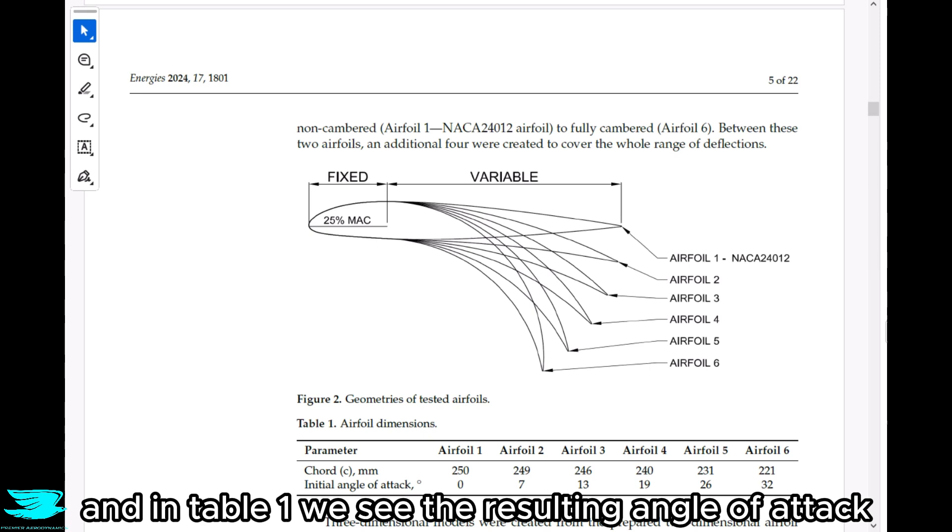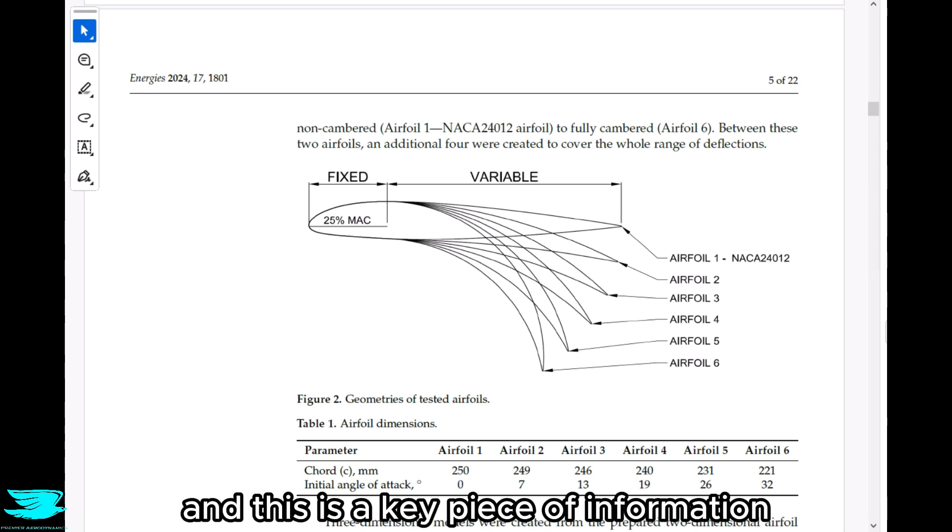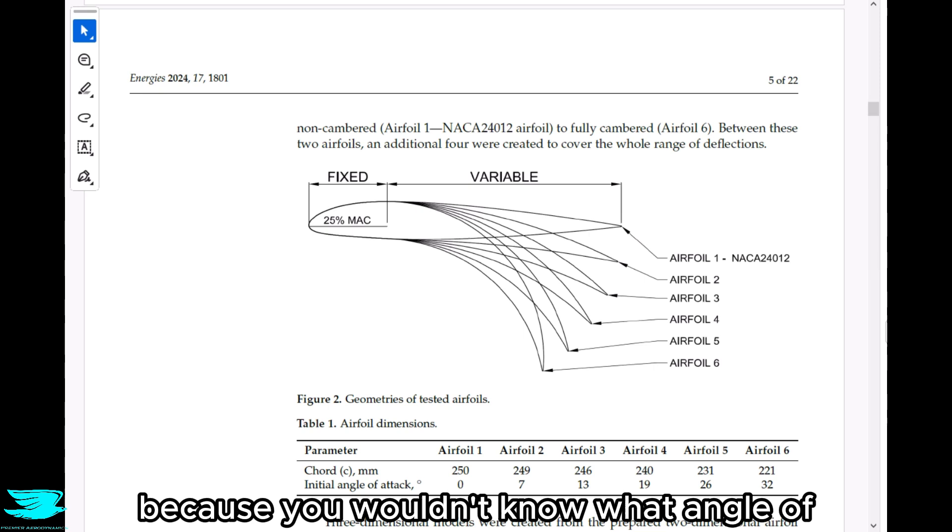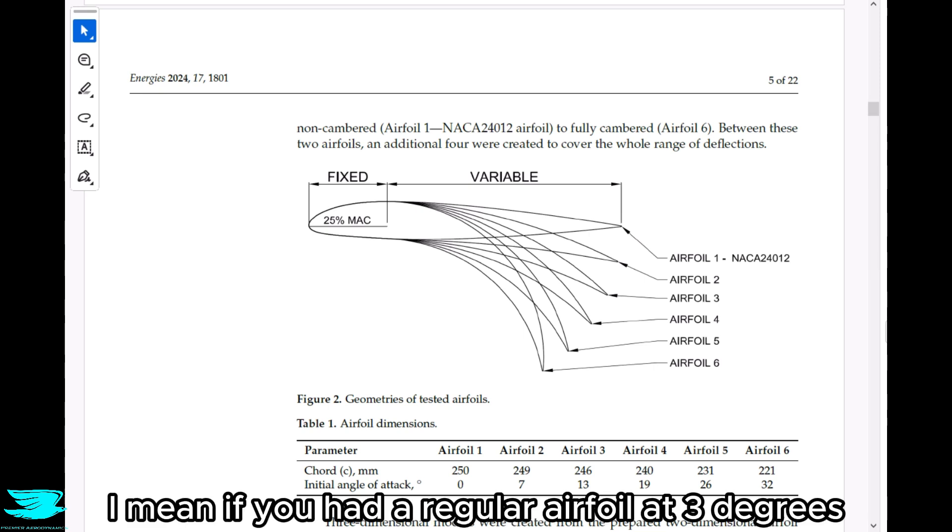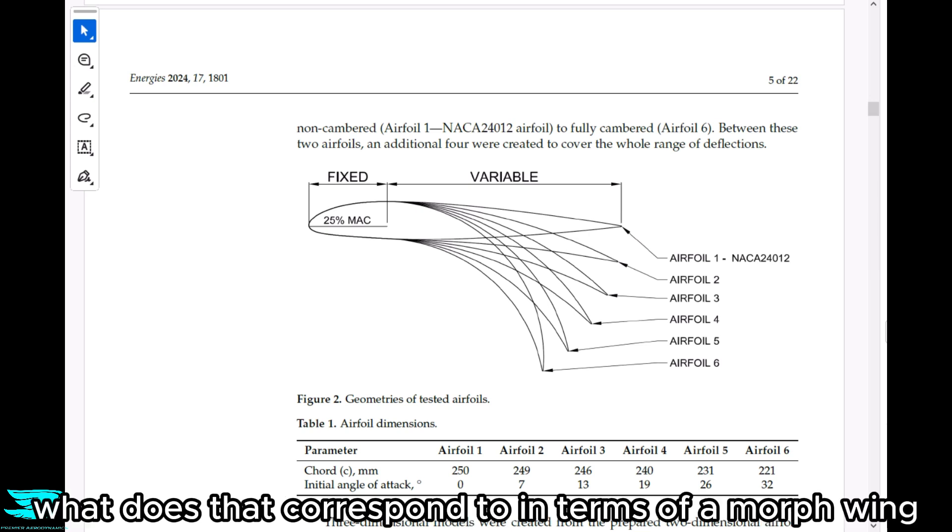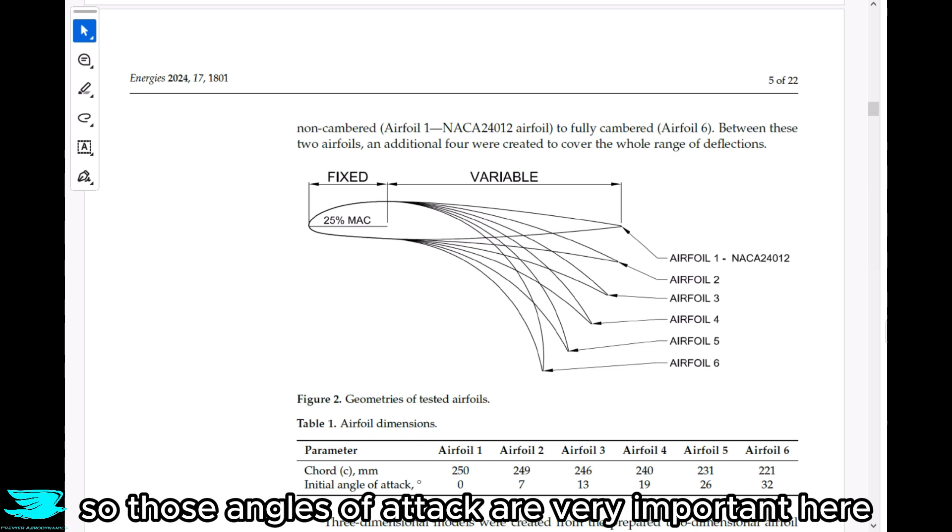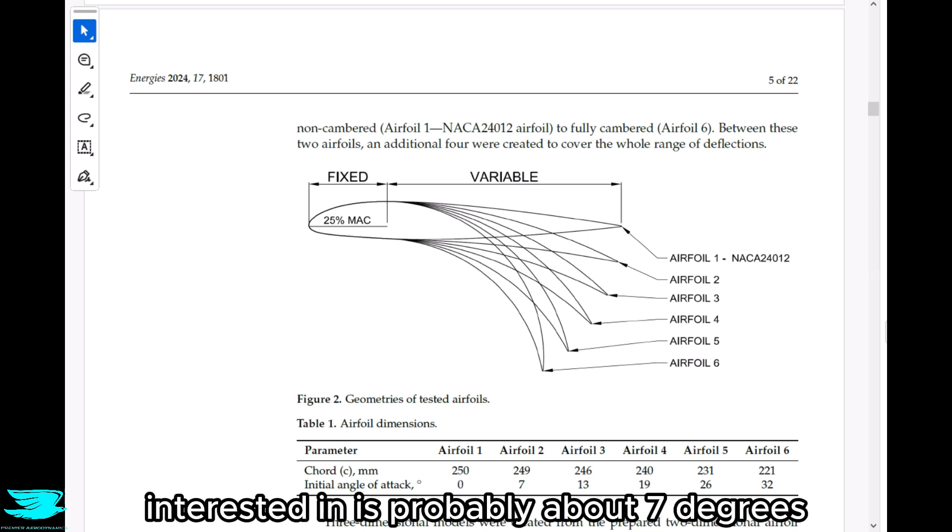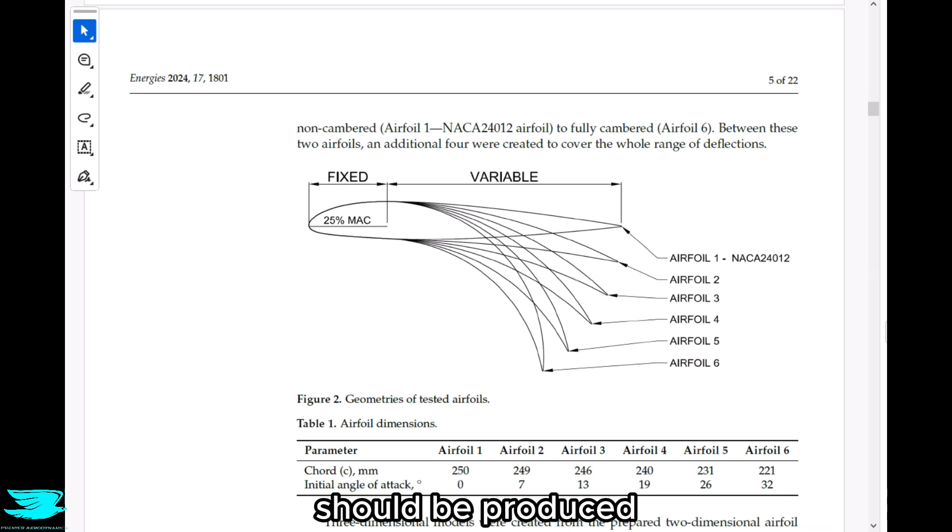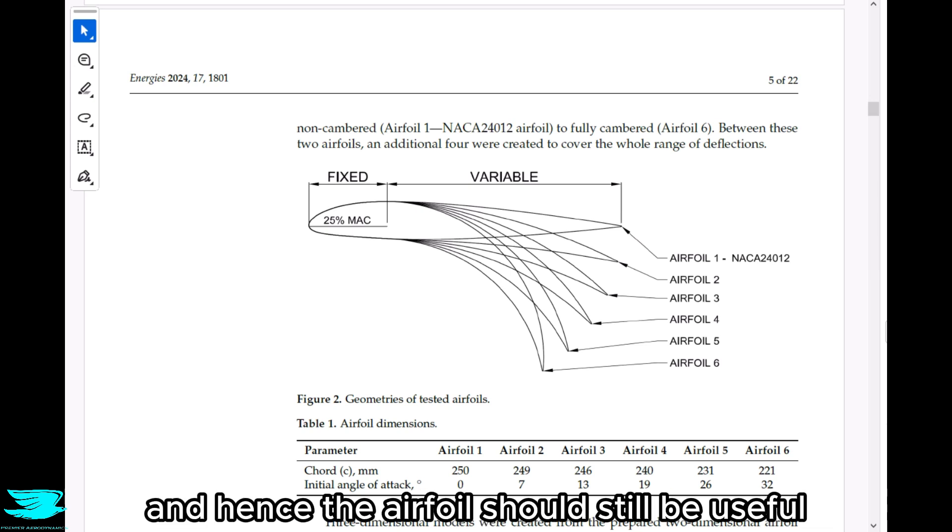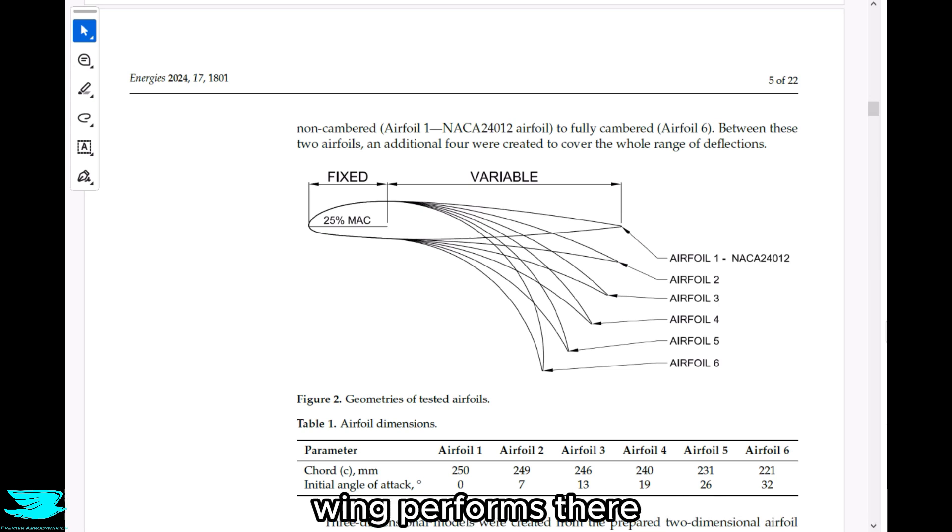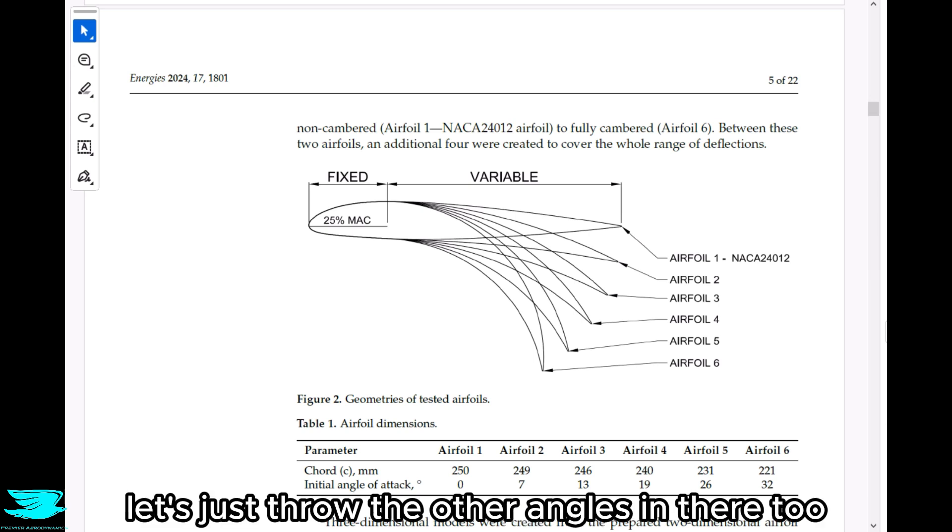And in table one, we see the resulting angle of attack when the wing is morphed. And this is a key piece of information because without these numbers, it would be impossible to compare this airfoil with ones that weren't morphed because you wouldn't know what angle of attack to compare it to. If you had a regular airfoil at three degrees, what does that correspond to in terms of a morphed wing? So those angles of attack are very important here. And they range from zero degrees to 32 degrees. For me, the angle that I'm most interested in is probably about seven degrees because this is an angle where substantial lift should be produced and hence the airfoil should still be useful.